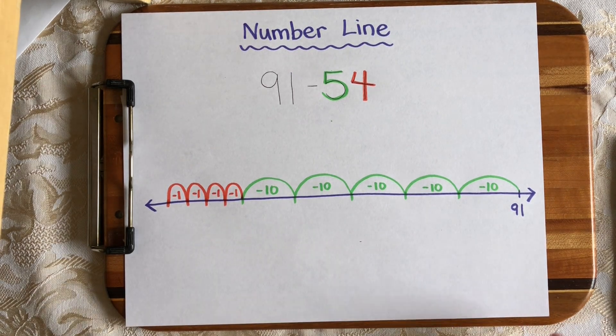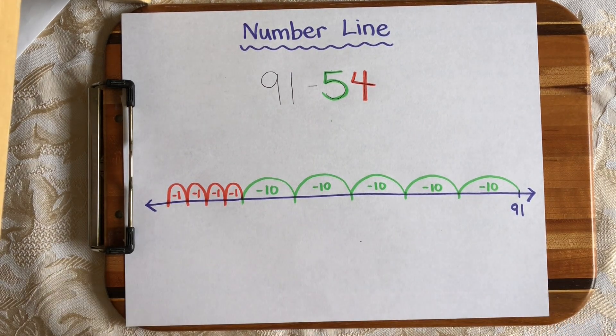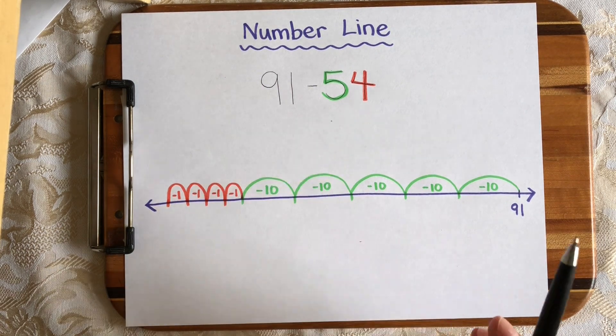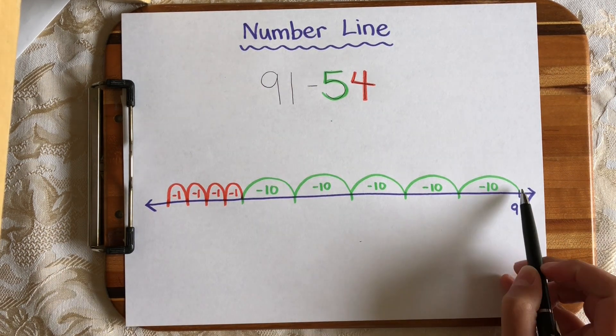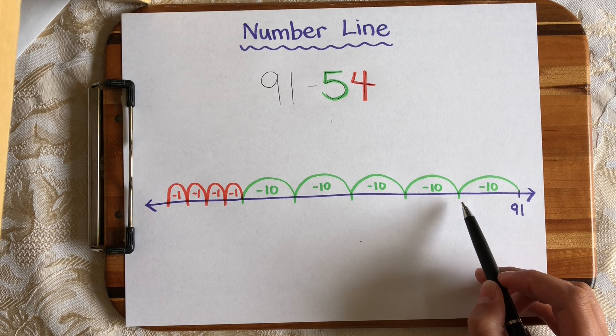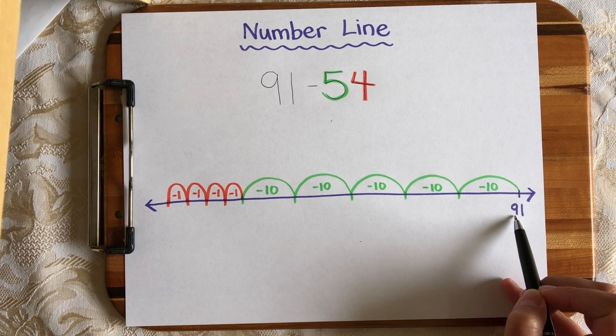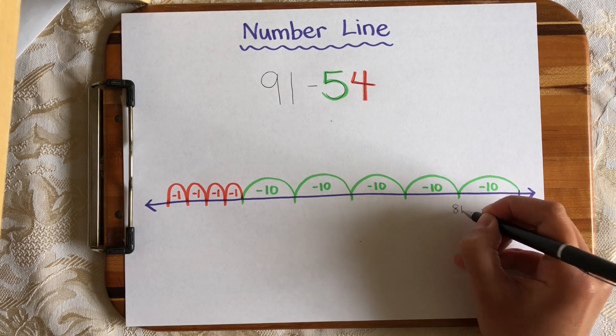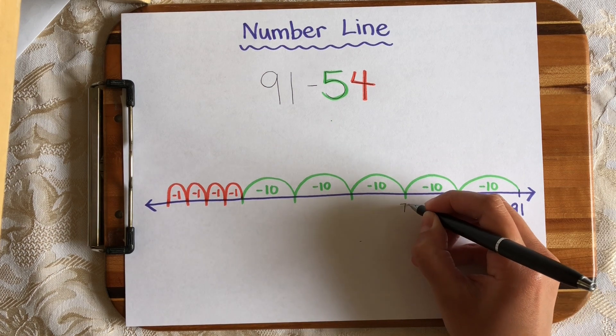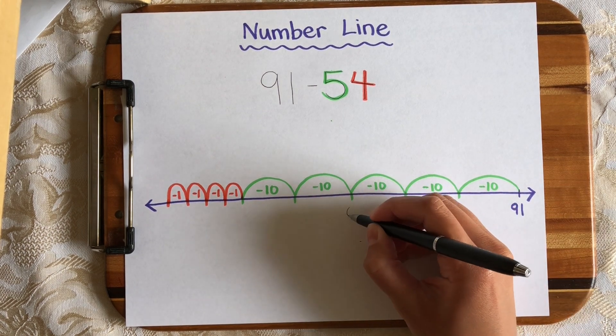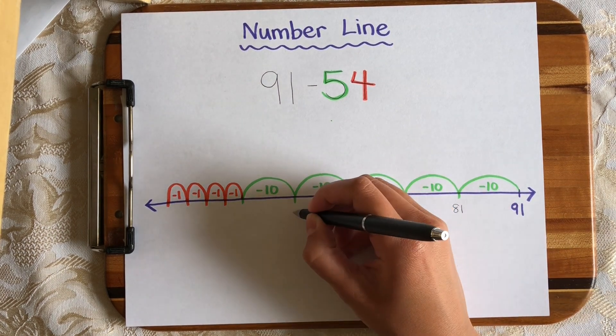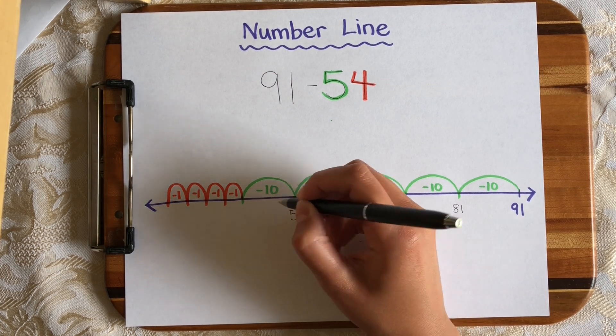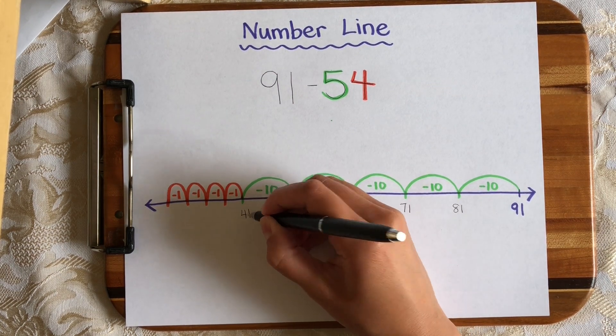And lastly I need to fill in all the numbers below my number line to find out what the difference between 91 and 54 is. So 91, if we move back 10, 91 minus 10 is 81, subtract 10 again, 71, subtract 10 again, 61 again, 51, and one more time to get us to 41.